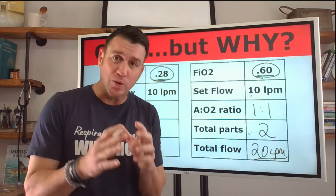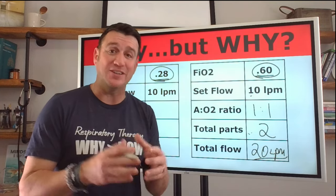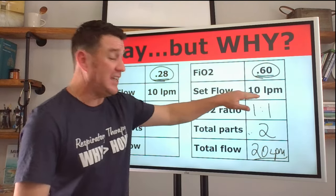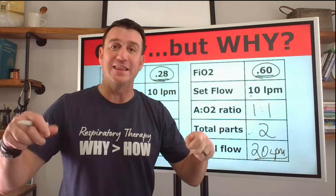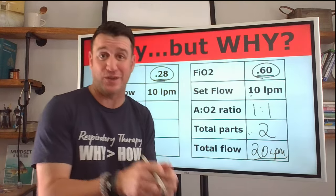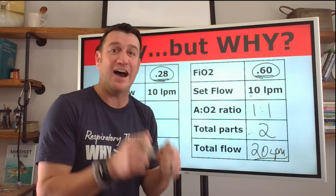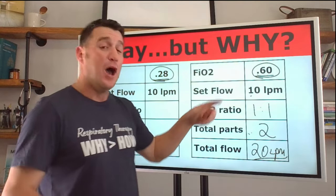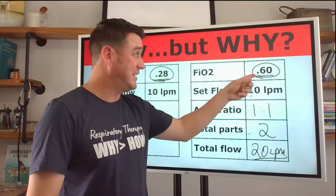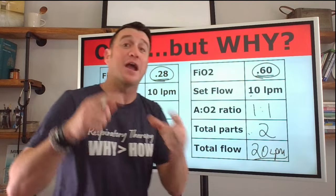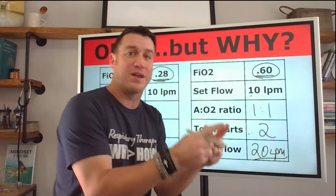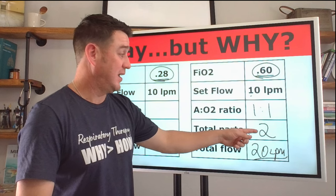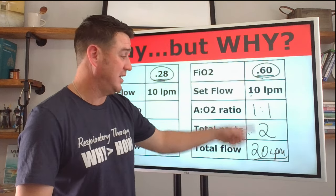That's the total flow that we're getting to the patient. Now here's where the magic is with this, right? Because if I was to ask you, what is the flow being delivered to the patient? Some of you may have said, well, we're set on 10, so it must be 10. But understanding this concept right here of air to oxygen ratios and how that affects total flow, you say, no, we're set on 10, but because we're delivering 60% with an air entrainment device for every one liter, we're actually bringing in one liter of room air. So it's actually two total parts for every liter. If we have two for every liter, two times 10 is 20.